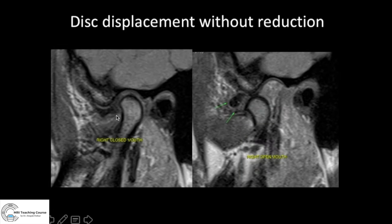Look at this case: mandibular condyle is here, nothing above it — the disc is clearly displaced anteriorly. Sometimes you can get confused by the lateral pterygoid attachment: is that the disc or where is the disc? Look at this area — there is no normal disc here, and this is displaced anteriorly. On opening the mouth, the disc is not going back to its normal relation with the mandibular condyle; it remains anterior. So this is disc displacement without reduction.